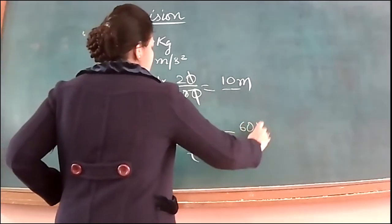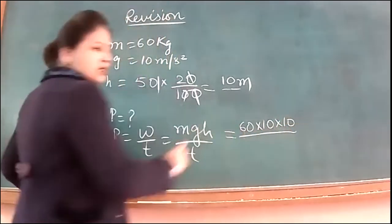So one zero, another zero, 10 meter is the height, that means. So we will be using work over time. And in this case, work has been done to climb certain heights. So that's why this is MGH over time. M is 60, G is 10, H is 10. And time is how much?